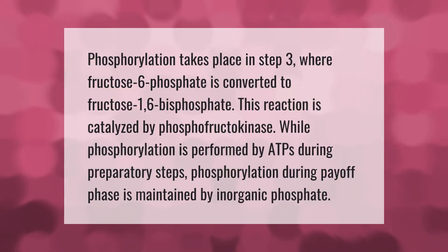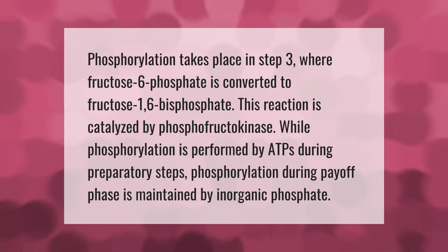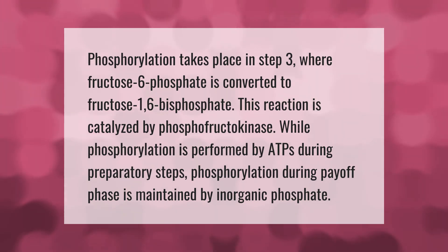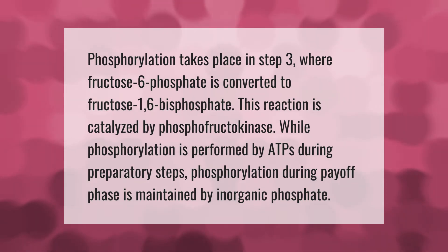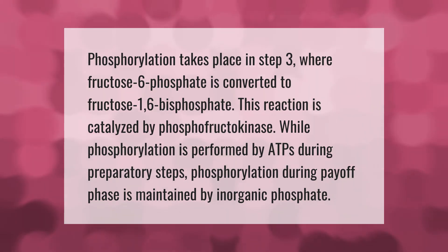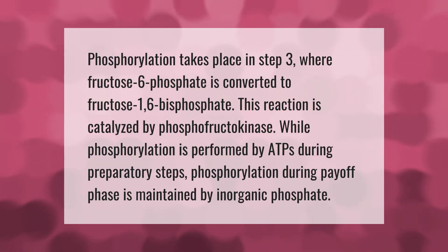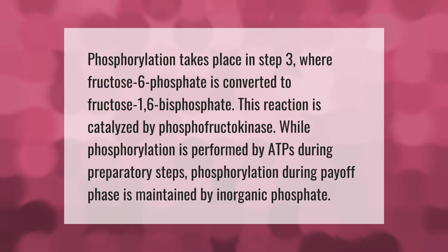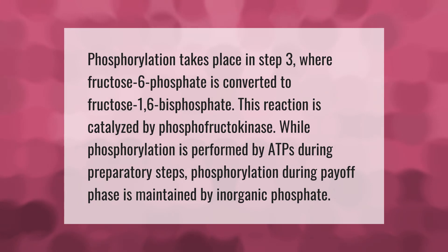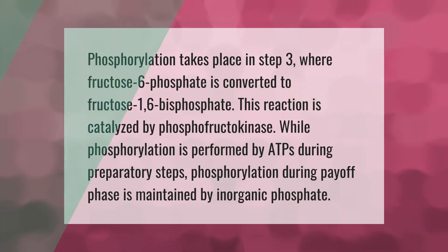Phosphorylation takes place in step 3, where fructose-6-phosphate is converted to fructose-1,6-bisphosphate. This reaction is catalyzed by phosphofructokinase. While phosphorylation is performed by ATP during preparatory steps, phosphorylation during the payoff phase is maintained by inorganic phosphate.